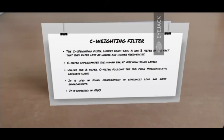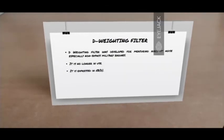The C weighting filter differs from both A and B in the fact that they filter less of the lower and higher frequencies. C filters approximate the human hear at very high sound levels. Now, one thing to note is that at very high sound levels, there is no disparity between the lower and the higher frequencies. All the frequencies almost sound equally loud at very high sound levels. So, unlike the A filter, C filter follows the 100 phon psychoacoustic loudness curve. It is used, not many times, but it is in use in sound measurement of especially loud and noisy environments. And it is expressed in dBC. The D weighting filter was developed for measuring aircraft noise, especially non-bypassed military engines. It is no longer in use. It is expressed in dBD.